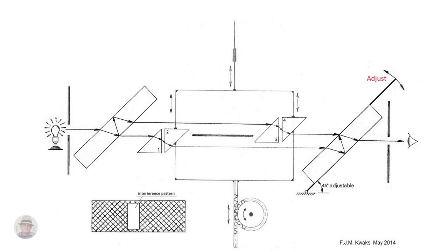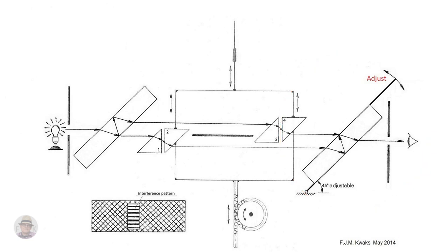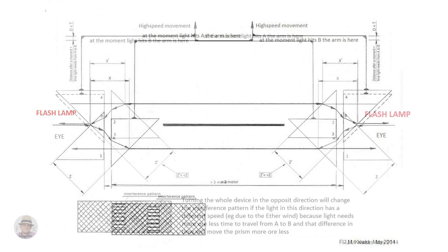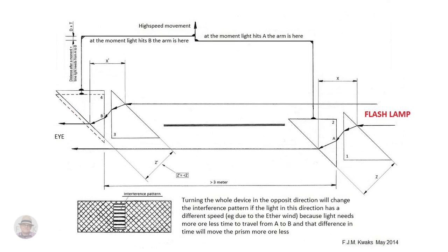While the mechanism is still moving at a constant 3000 times per minute, we have to readjust the last second piece of glass to get the interference pattern back. We will then turn the whole device, while still moving at a constant 3000 times per minute, in the opposite direction. If the speed of light in this direction, due to some reason, is different than the speed of light in the previous direction, then there will be a time difference in when the light beam reaches B, and that will move prism 4 more or less, which will change the total thickness of prisms 3 and 4, and that results in changing the interference pattern by moving up or down.